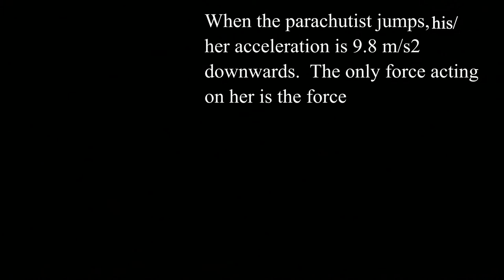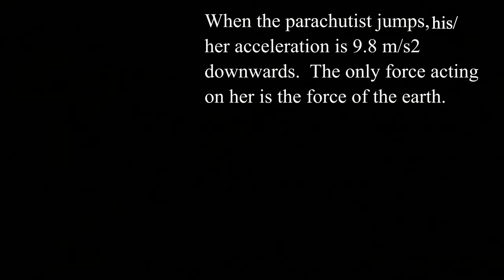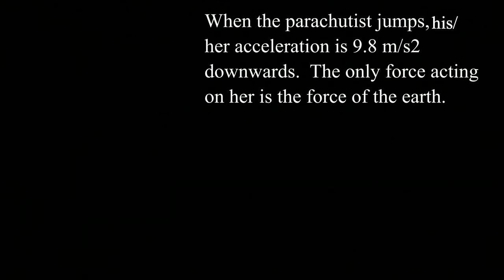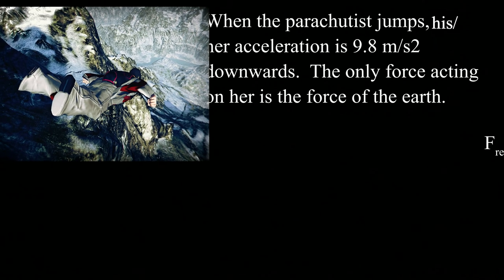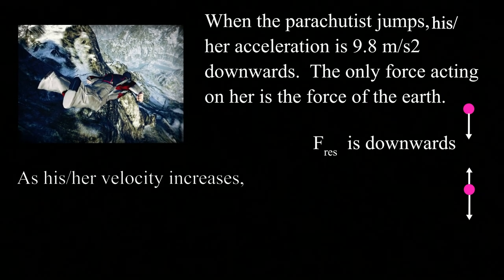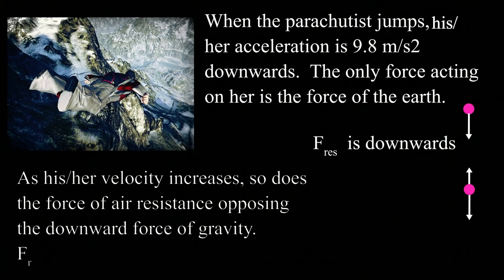When a parachutist jumps, the initial acceleration is 9.8 m/s² downward. The only force acting is gravity. As the parachutist's velocity increases, so does the air resistance opposing the downward force of gravity.